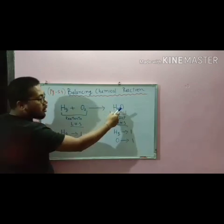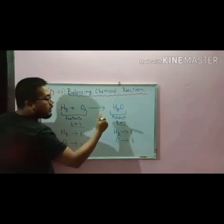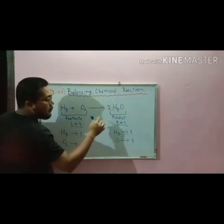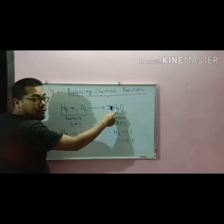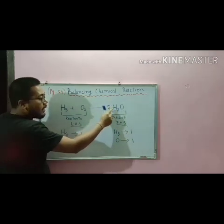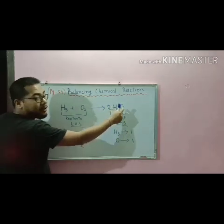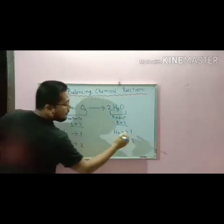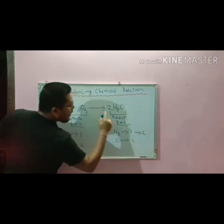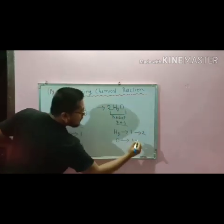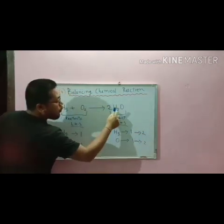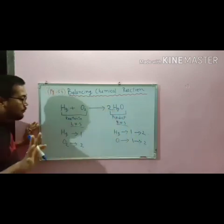So to make oxygen two on the RHS, if we put a coefficient of two here, that means this two applies to mercury also and to oxygen also. That means mercury will turn to two and oxygen will also turn to two — two into one equals two.